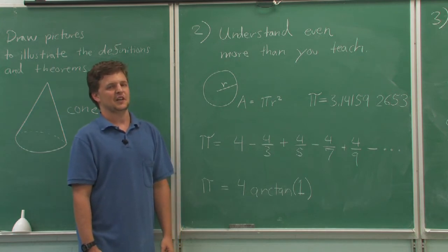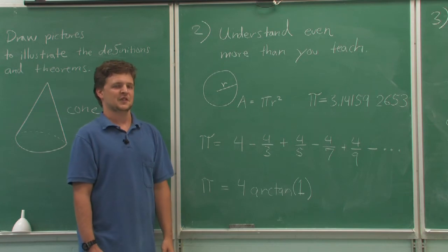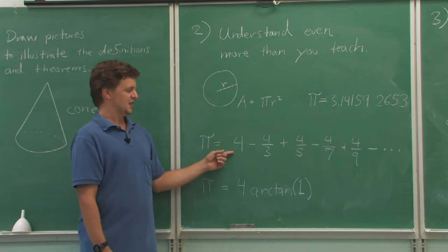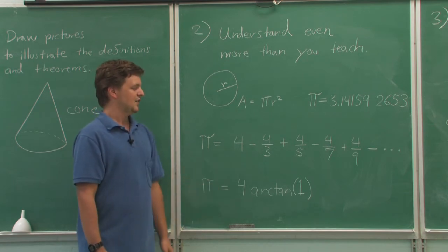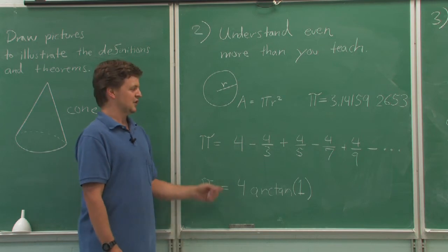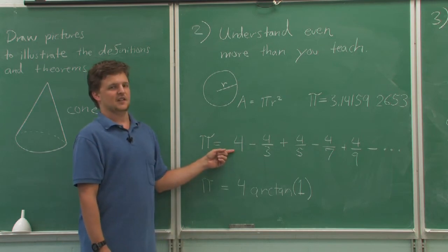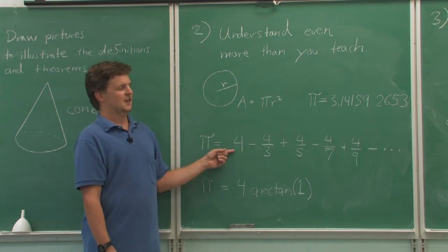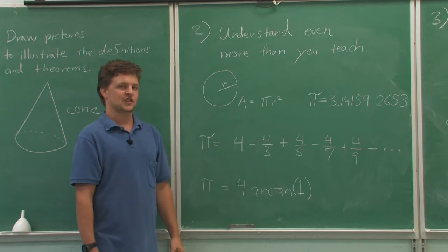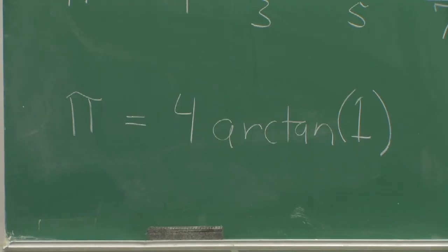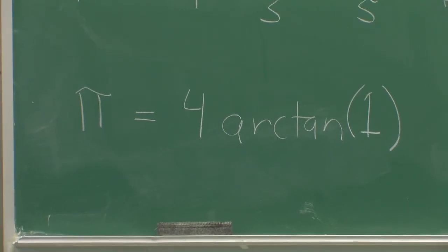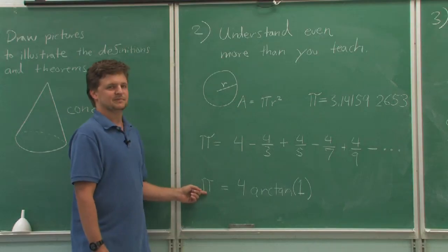But how do we know that gives you pi? Now you need some calculus. You first have to be able to show that this sequence converges, and then you have to know that this sequence is actually the expansion of arc tangent times four, evaluated at one, which gives you pi.